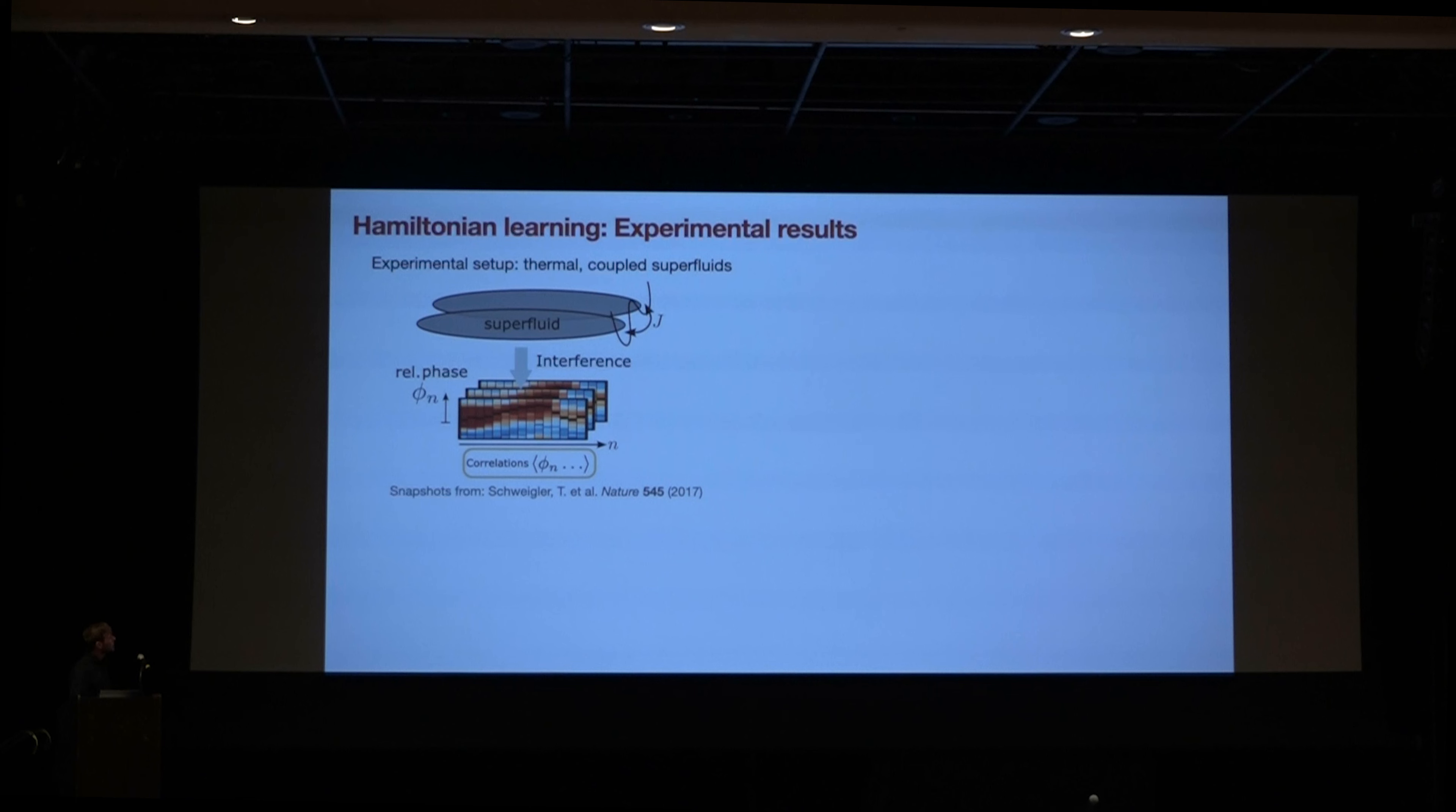So with that, I come to the experimental results on this first slide over here. So yeah, as I said, the experiment by Jörg Schmiedmayer, what they have is they have this optical potential over here, and they have two clouds of ultracold atoms which are in the BEC phase, and they can interact by tunnel-coupled regions. And these superfluids, they have actually been shown to realize this sine-Gordon statistical model that we focus on.